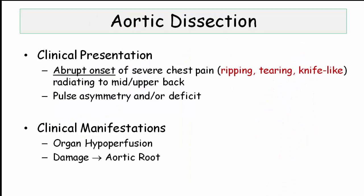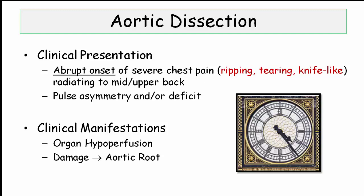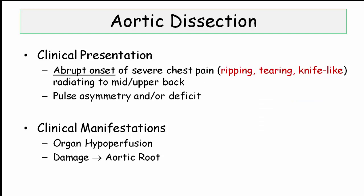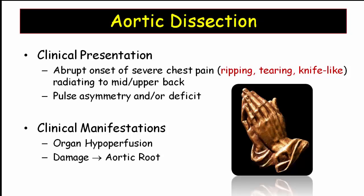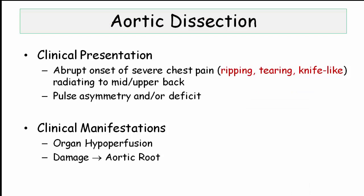Moving on from pathology to the clinical presentation, the patient with dissection will be described by the abrupt onset of severe chest pain — abrupt meaning they can tell you the exact time. It may radiate to the mid or upper back and will be described as a ripping, tearing, or knife-like sensation. When the NBME uses those terms, they are begging you to diagnose aortic dissection. Other features that may be described include pulse asymmetry and/or pulse deficit. Unlike aneurysm, the clinical manifestations of dissection are many-fold, varied, and catastrophic.